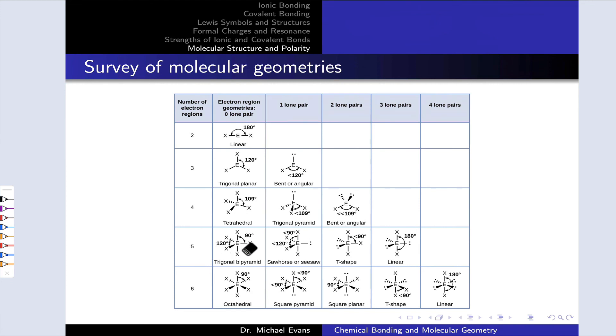Generally, and this is actually true of the trigonal bipyramidal geometry and can be most clearly seen if you look at the octahedral examples, we want to put those lone pairs as far apart from one another as we possibly can. For example, generating a square planar arrangement when we have two lone pairs in an octahedral geometry, getting the lone pairs as far apart from one another as we possibly can.